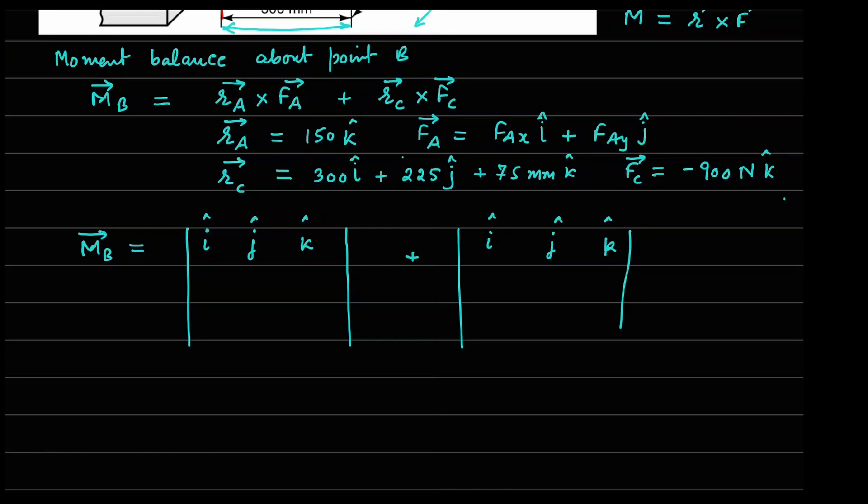And the first row here will be the numbers coming from your R. So this is RA, this is FA. So if you look at RA, we have only 150. So i 0, j 0 and 150 goes in K cap. And for the force FA, we have FAX appearing here and FAY going there, there is no Z force. Now for the C point, if you look at your RC, i cap is 300, j cap is 225 and K cap is 75. In terms of forces, we have no X and Y component, only Z component is there.